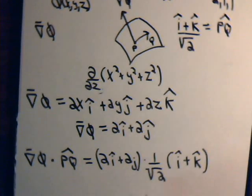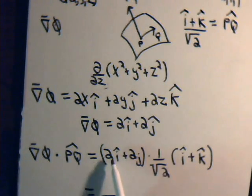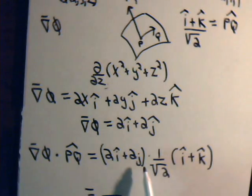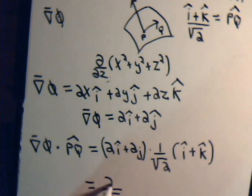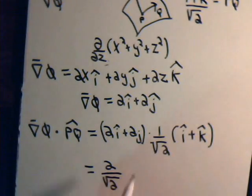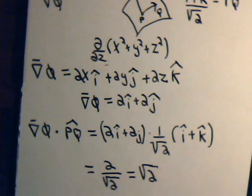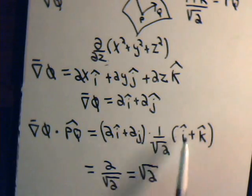So we have 1 over the square root of 2. And then we have i dot i is 1, 2 times 1 is 2, j dot k is 0. So we have 2 divided by the square root of 2, or that equals the square root of 2. So I'm going to take this dot product, this dot this, it equals the square root of 2.